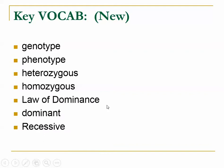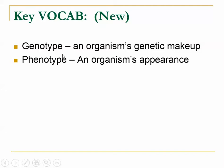Let's start with genotype and phenotype. An organism's genotype is its genetic makeup — what genes it actually has. An organism's phenotype is its appearance. What does it look like? Does it have curly hair? Does it have three antennae? Does it have purple eyes? So an organism's phenotype is its appearance.